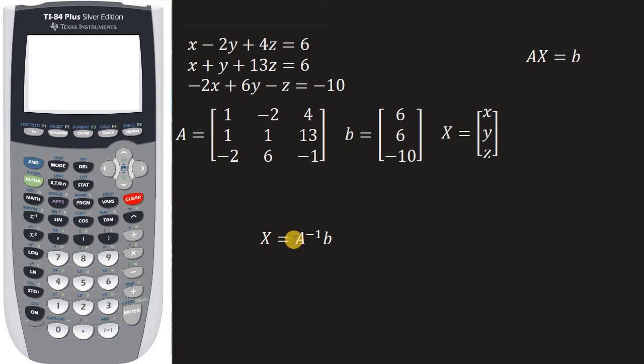x equals A inverse times b. So basically to solve this, you've got to multiply the inverse of this matrix times the constant matrix. So first,